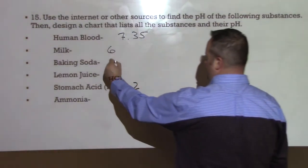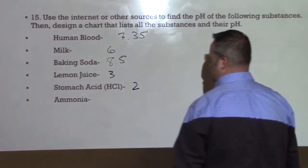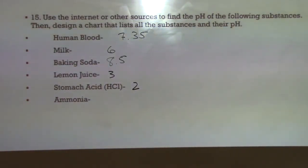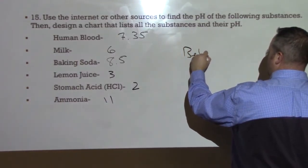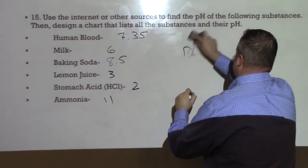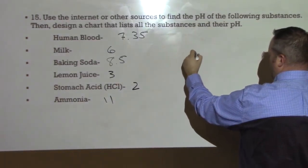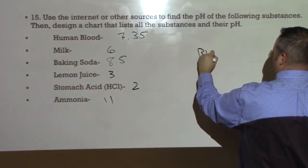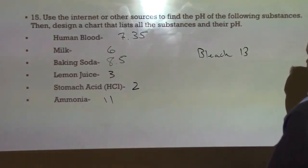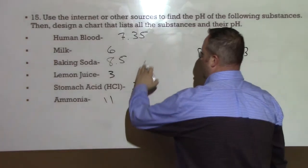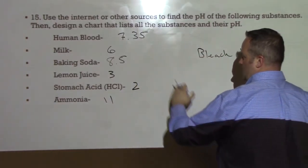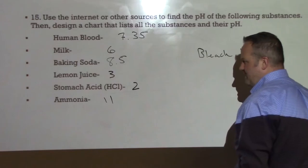Milk, slightly acidic with a pH of 6. What's baking soda? Baking soda should be about an 8.5. It's very good for neutralizing acids. And then ammonia is also known as glass cleaner. And it has a pH of about 11. Bleach, or sodium hypochlorite, bleach is about a 13.